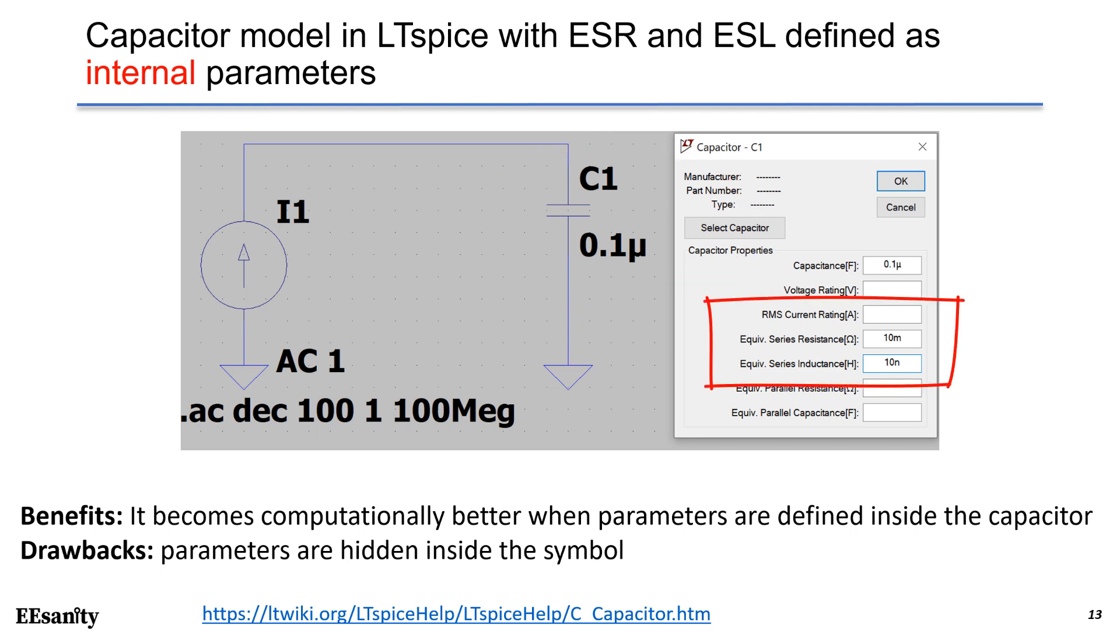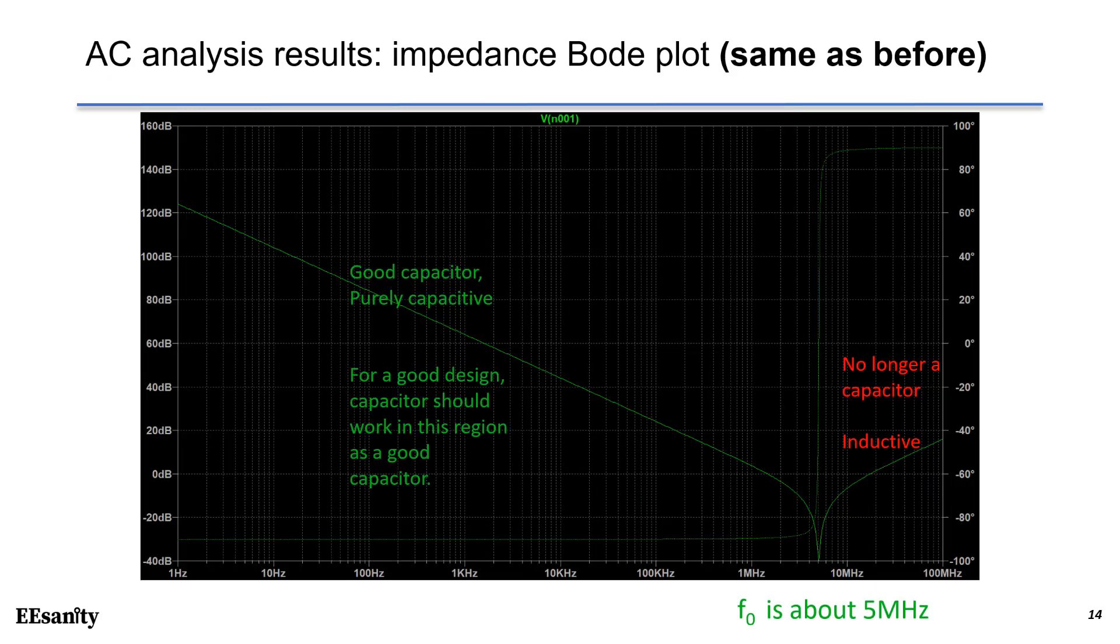Benefit is it becomes computational better when parameters are defined inside the capacitor. However, the information about these two parameters are hidden inside the symbol, and you cannot see it from the schematic directly. Again, this is the Bode plot generated in AC analysis. This is the same result as before. We can say that these two methods are pretty equivalent.